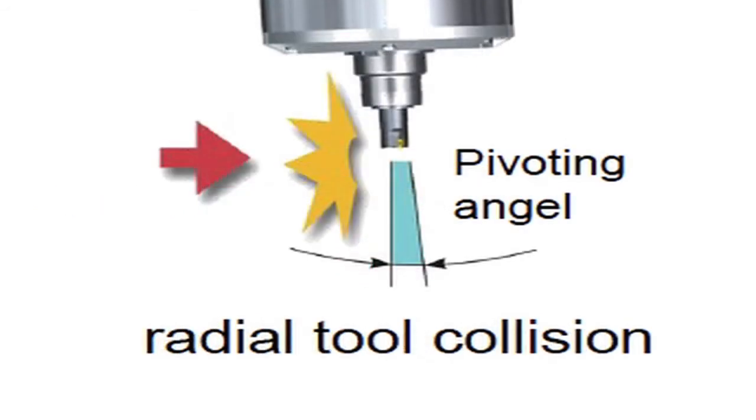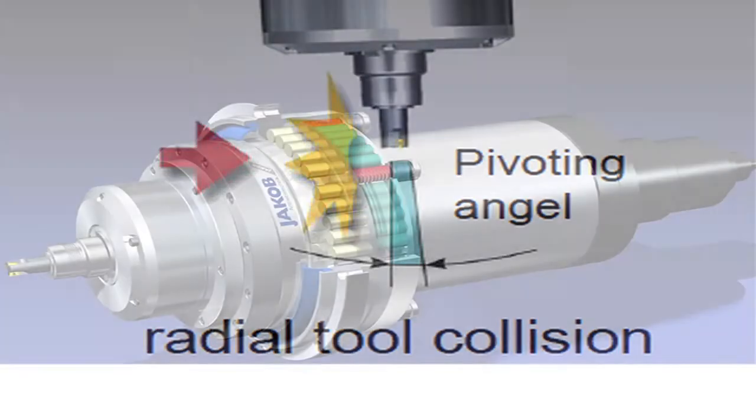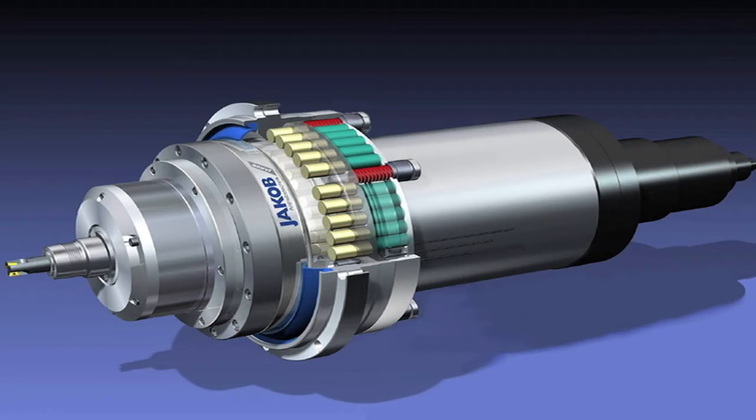While there are emergency stop systems and proactive crash avoidance software solutions, crashes still occur. The trick is to stop a crash before there's any major damage. To that end, German company Jacob Antriebstechnik has introduced the motor spindle safety system, or MS3 for short.